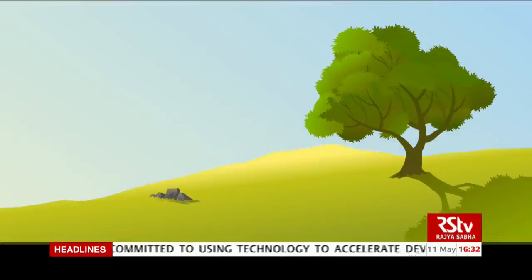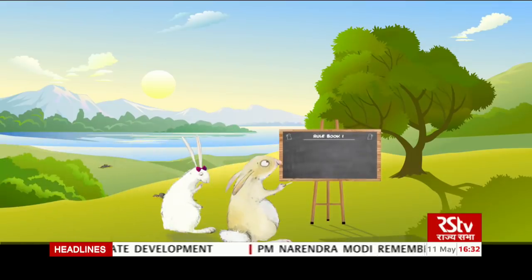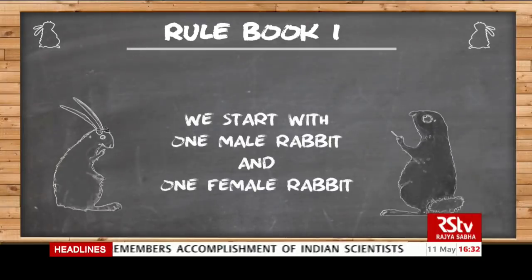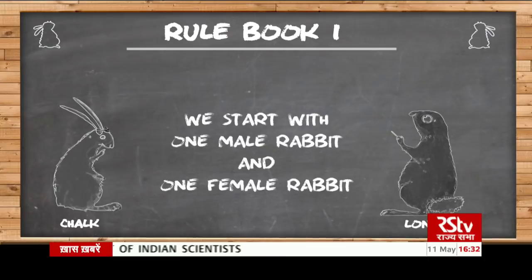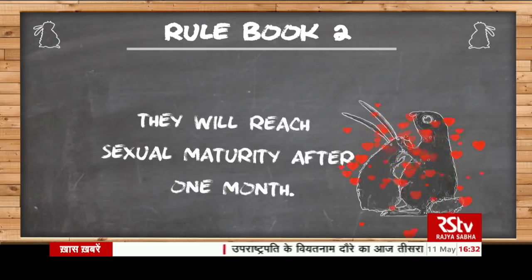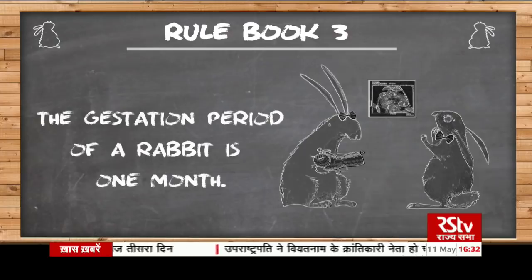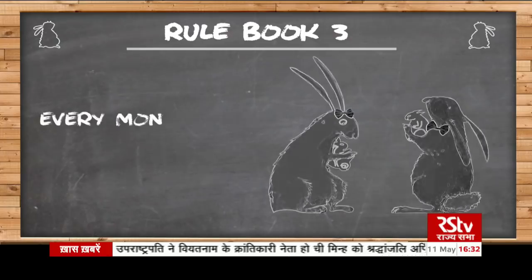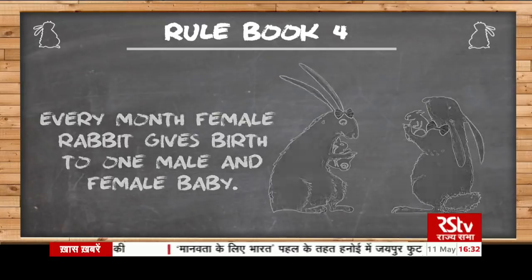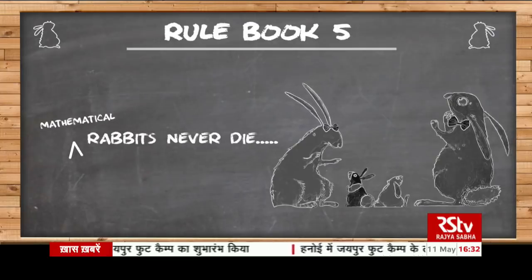Now back to Abir and the story of Lonely and Chock. As the rabbit family expands in Fibonacci's field, here are some simple rules to keep in mind. We start off with one male rabbit and one female rabbit — Lonely and Chock. They will reach sexual maturity after one month. The gestation period is one month, and then the female will give birth every month to one male and one female rabbit. And rabbits never die, because this is math.